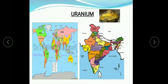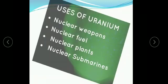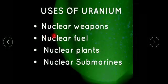The largest deposits of uranium are found in Australia, Kazakhstan, and Canada. Andhra Pradesh has a small amount of uranium in India. Uses of uranium: uranium is used in nuclear weapons, nuclear fuel, nuclear plants, and nuclear submarines.